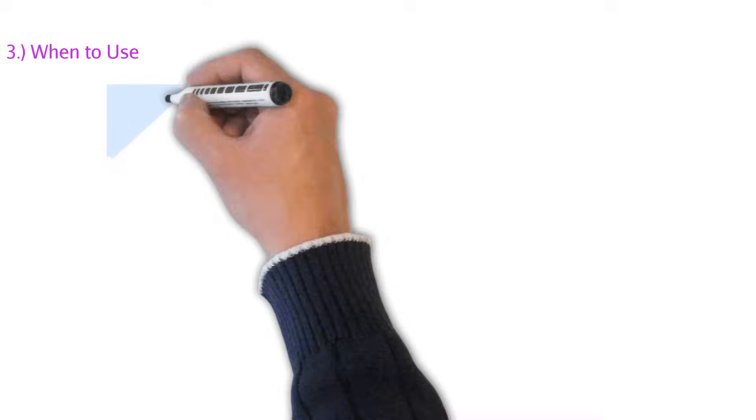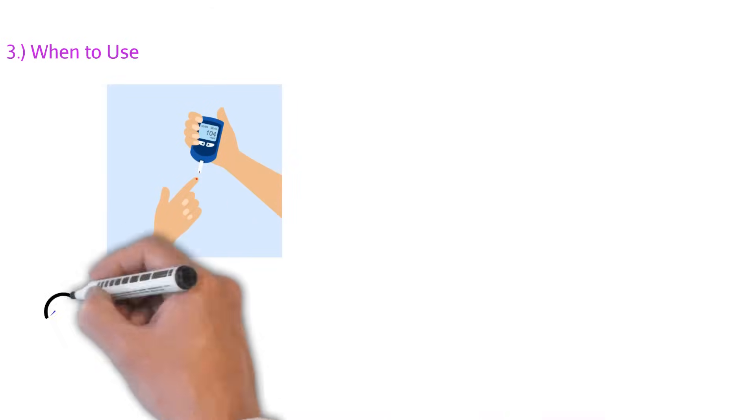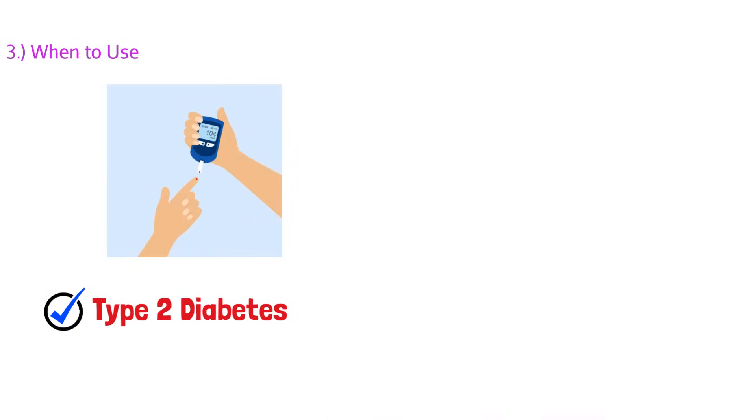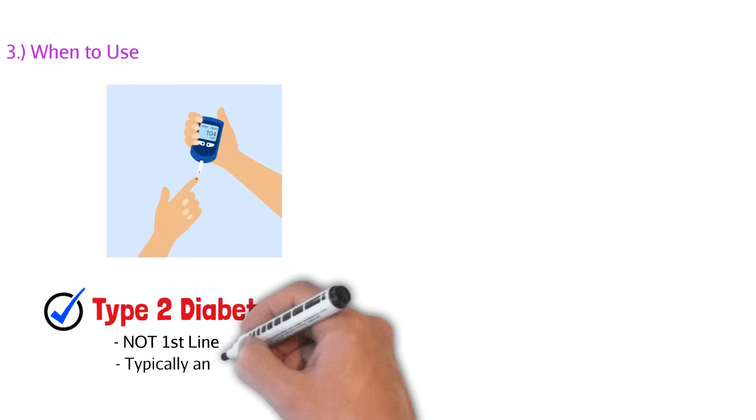Now that we know how GLP-1s actually work in the body, let's talk about when we use them. The first indication is type 2 diabetes. We kind of talked about it. It is not first line. We typically add on these medications as a second line or third line. Typically, first line is always reserved for metformin. And notice how we said type 2 diabetes. This medication is not used in type 1 diabetics. They're used in type 2 diabetics.